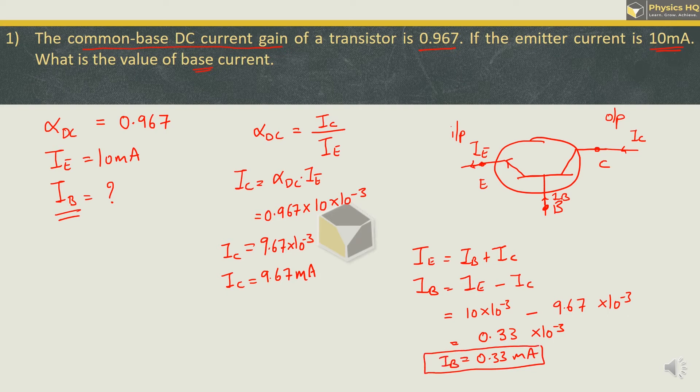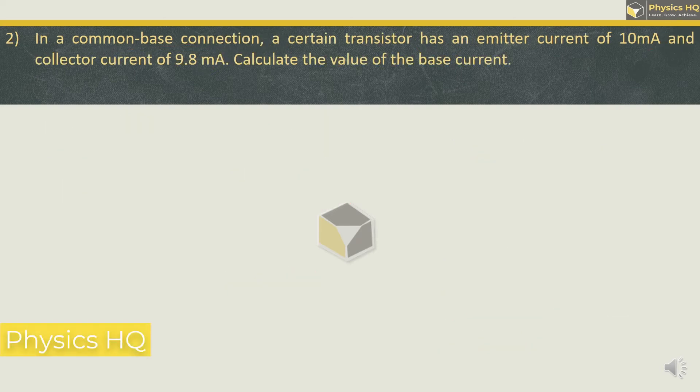Hope you all understood this. Let us go ahead to the next example. In a common base connection, a certain transistor has emitter current of 10 mA and collector current of 9.8 mA. Calculate the value of base current. We will use the same formula: IE equals IB plus IC.